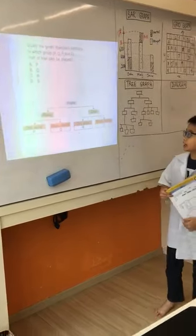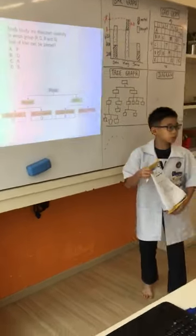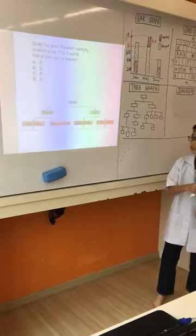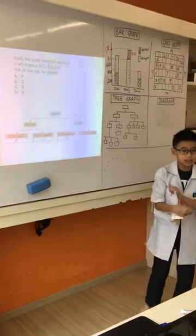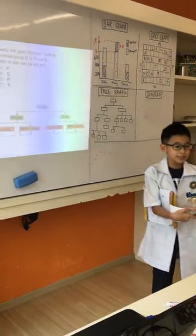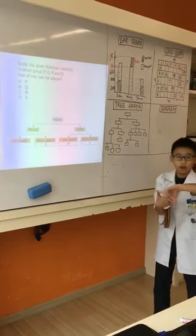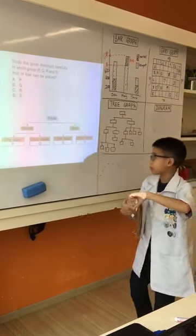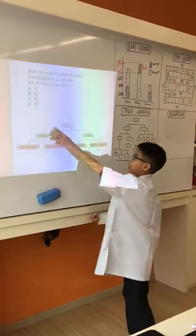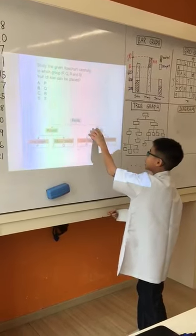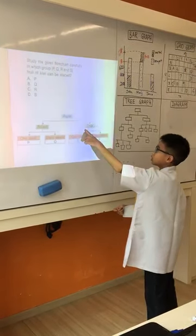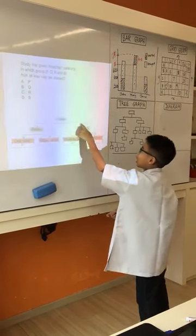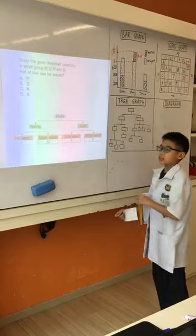Here, we just show the people the tree chart. So, usually, kiwi is an oval shape. It's an oval shape.